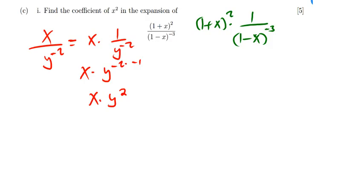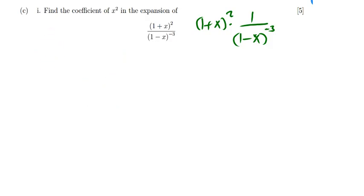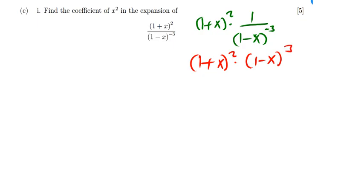So this is what is going to happen there. I'm going to have 1 plus x squared times — this negative is going to disappear now — 1 minus x to the power 3. Meaning the negative has disappeared. Now we want to find the coefficient of x squared.